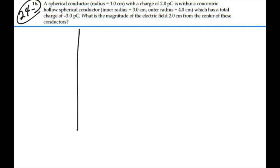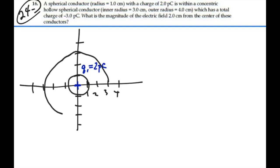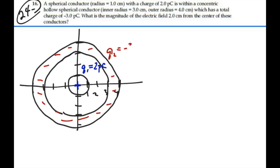Alright, let's see if we can imagine what we have here. We have an inner conductor positive charge, let's call it Q1 equal to 2 picocoulombs. We have an outer conducting shell of inner radius 3 centimeters, outer radius 4 centimeters. Charge in that is negative, and that Q2 is equal to negative 3 picocoulombs. We want to find the electric field at a point P located at 2 centimeters away from the center.